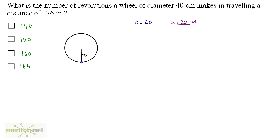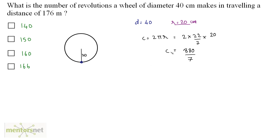So let us first find out what is the circumference of this circle. The circumference is equal to 2πr, so that is equal to 2 × 22/7 × 20. So 22 times 2 is 44, and 44 times 20 is 880/7. So this is the circumference, meaning in one revolution the distance travelled is 880/7 cm.